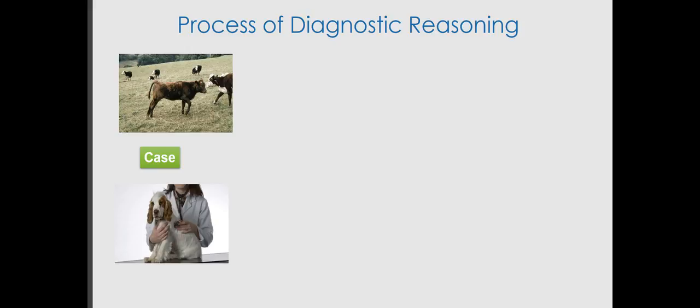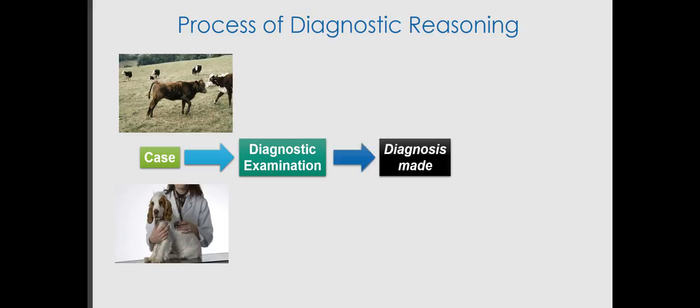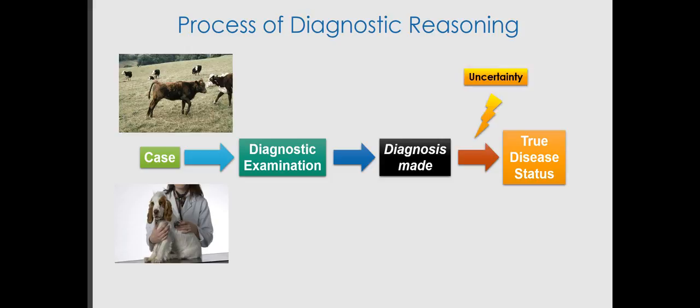If we start with a case — the case could be any animal that a veterinarian has to examine. It could be an animal within a herd, such as a calf shown in the image, or it could be a dog. The first step is the diagnostic examination, and there are a whole number of factors that influence that process. Once that is completed, the veterinarian has to make a diagnosis, and the tricky bit is whether that diagnosis actually fits the true disease status of the animal. There is some uncertainty associated with that relationship, which is quite a difficult situation for the diagnostician but also for the owner of the animal.